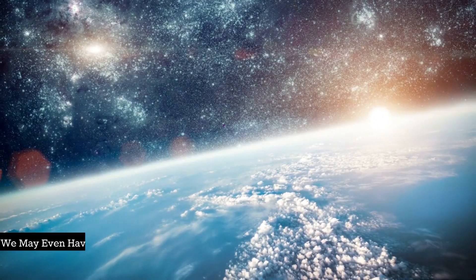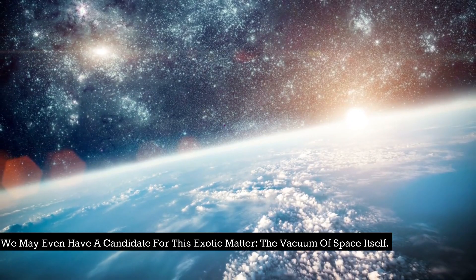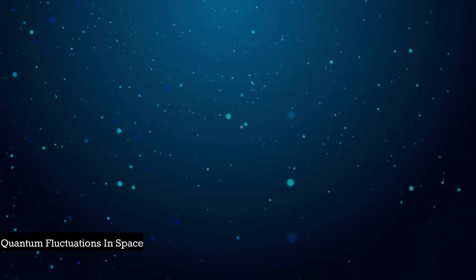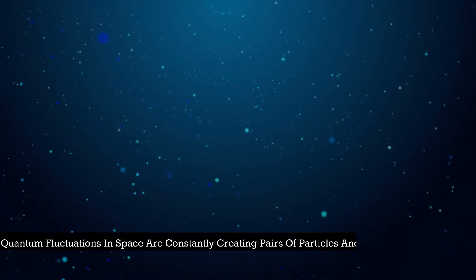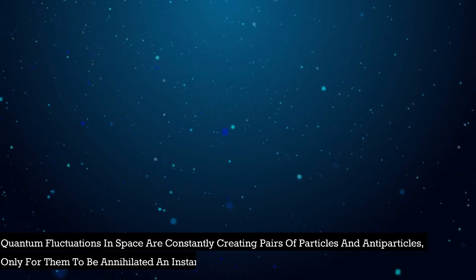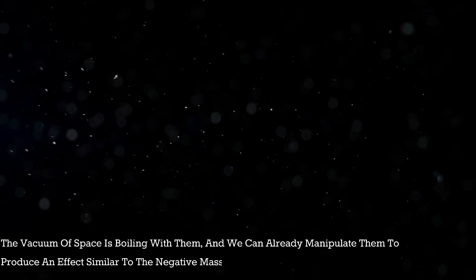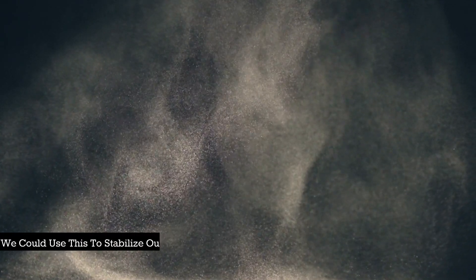We may even have a candidate for this exotic matter - the vacuum of space itself. Quantum fluctuations in space are constantly creating pairs of particles and antiparticles, only for them to be annihilated an instant later. The vacuum of space is boiling with them, and we can already manipulate them to produce an effect similar to the negative mass we're looking for. We could use this to stabilize our wormholes.